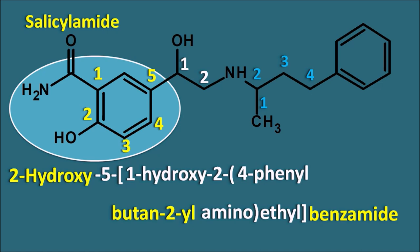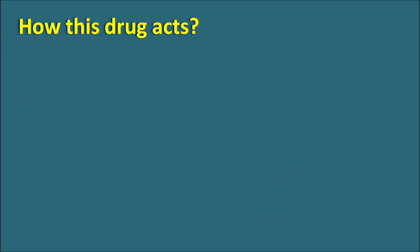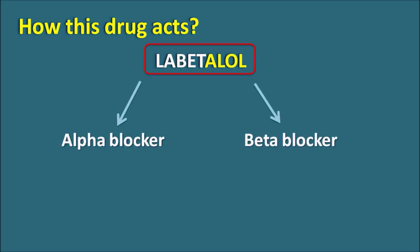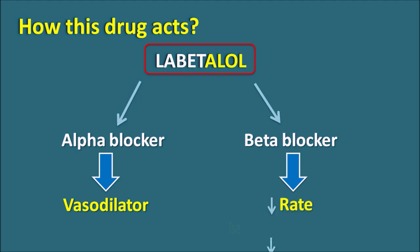On the amino group, a larger chain is present which may result in the extended activity of Labetalol. As discussed, Labetalol acts as both an alpha blocker and a beta blocker. By blocking alpha receptors, it acts as a vasodilator, and by blocking beta receptors, it can decrease the rate and force of contraction of the heart. The action on beta receptors is non-selective, meaning it acts on both beta-1 and beta-2 receptors.